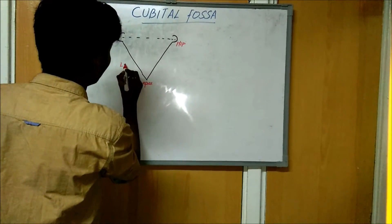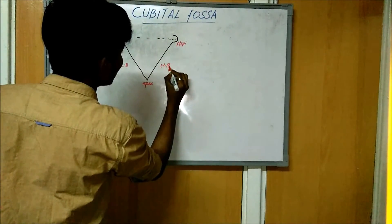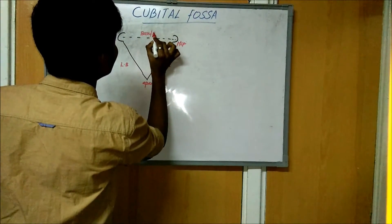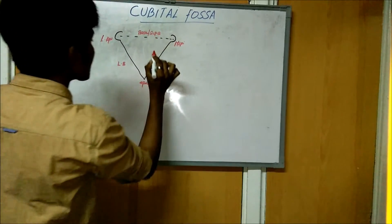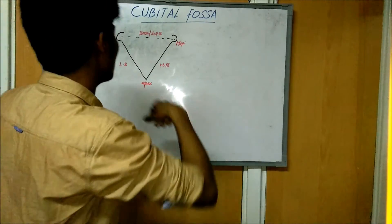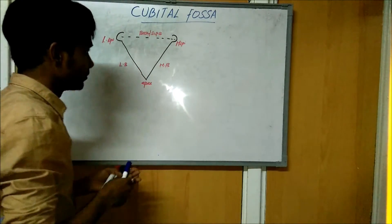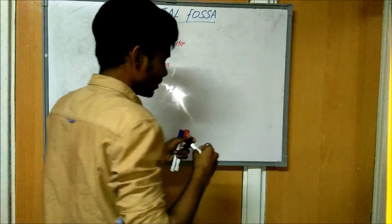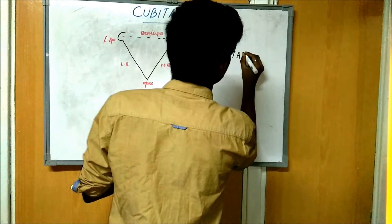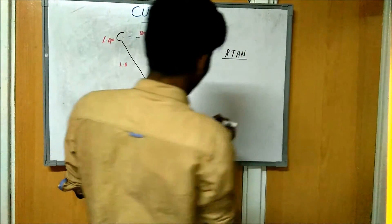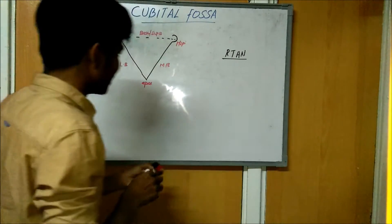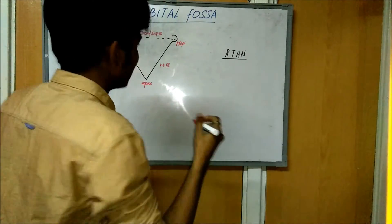This line is the lateral border, and this line is the base or superior border. Let me tell you a mnemonic for what structures are present in the cubital fossa — or think of Rahul thinking about neuroanatomy.